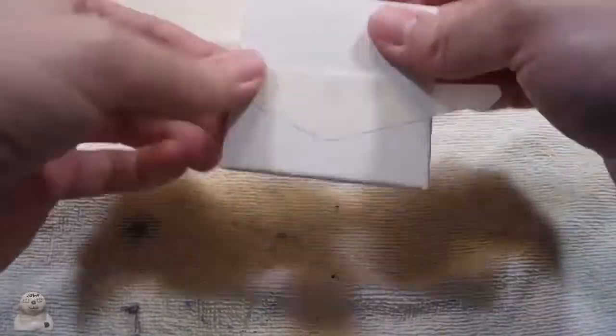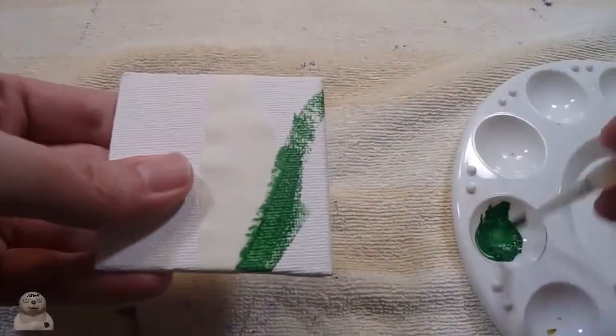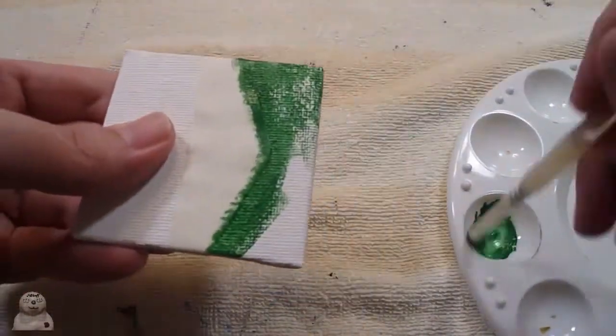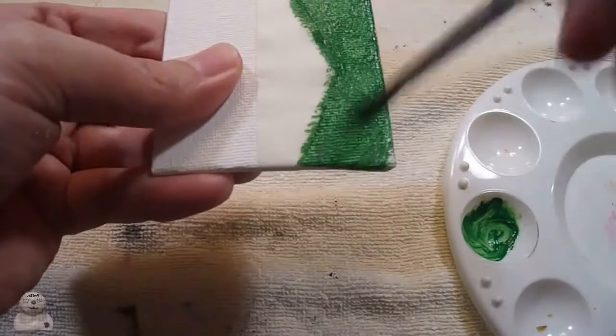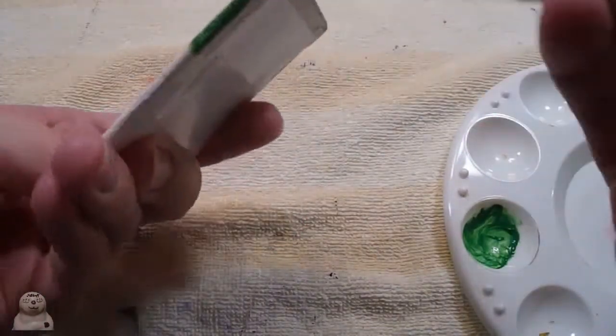Now for Sailor Jupiter I already painted the base on it as you can see. I mixed up some green with a little bit of the neon green I have. I have to admit I have to remember to use this when I paint grass, it's perfect.